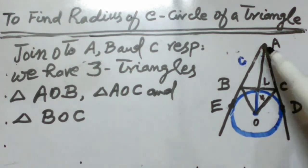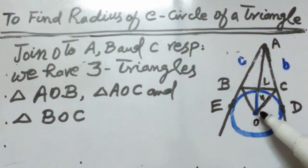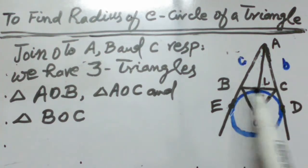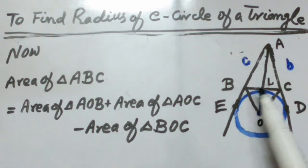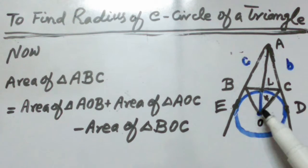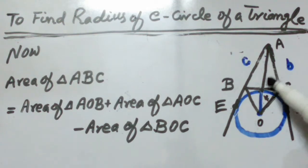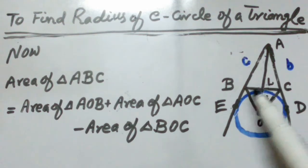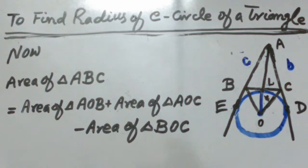Now we calculate the area of triangle ABC. The area of triangle ABC equals the area of triangle AOB plus the area of triangle AOC, minus the area of triangle BOC.